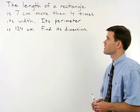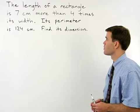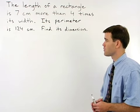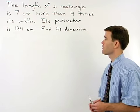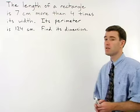The length of a rectangle is 7 centimeters more than 4 times its width. Its perimeter is 124 centimeters. Find its dimensions.